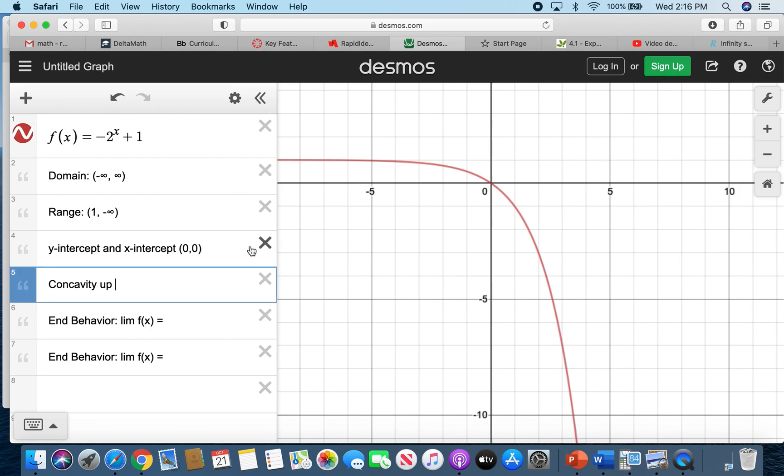Now this doesn't have concavity up. Instead, it has concavity down because the graph is concave down. Now, what are the values of x which will make it concave down? So again, it's from negative infinity to positive infinity, which is actually the same as the domain of the function.